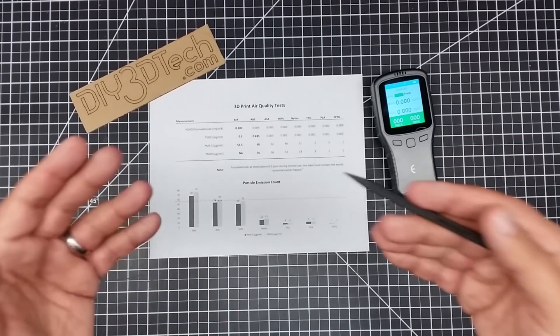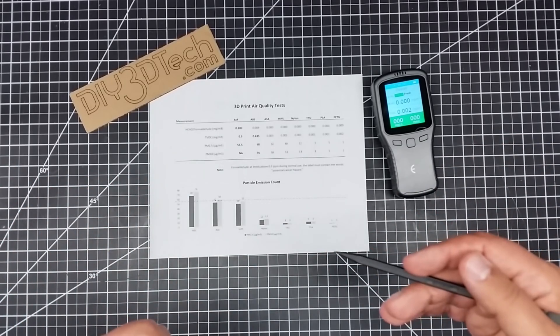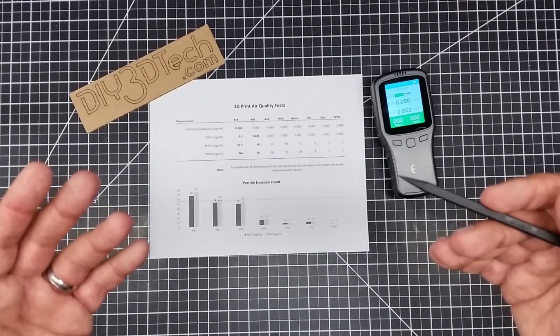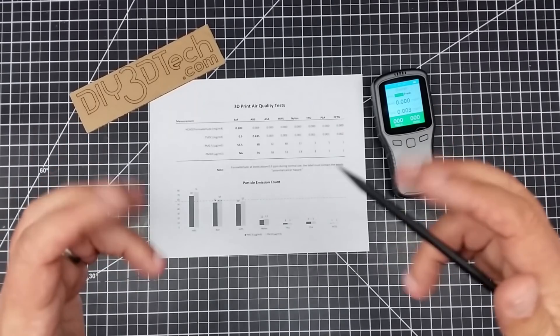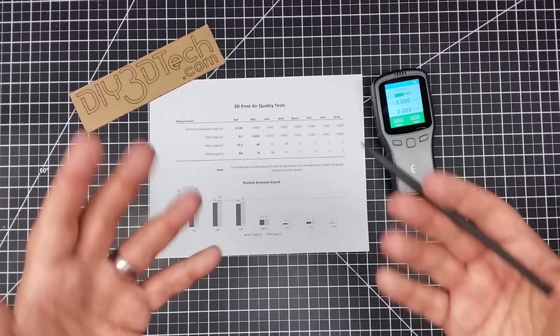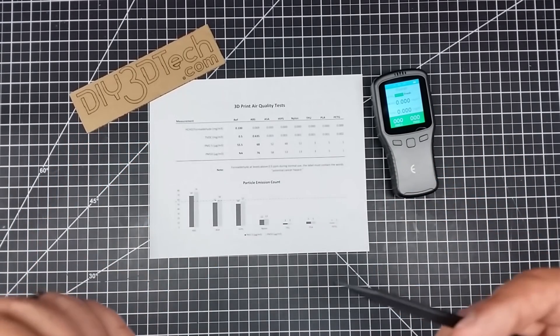But the one thing I found is, especially on the particulates, it does seem to be pretty accurate. So that's the piece I liked. And it does seem to recognize general volatile organics, and obviously formaldehyde. So anyways, hopefully you found this interesting.